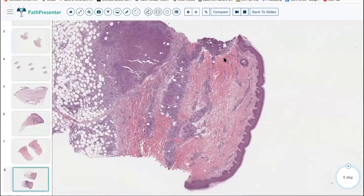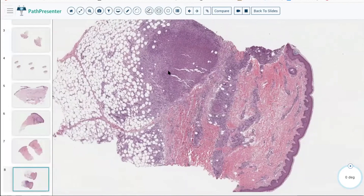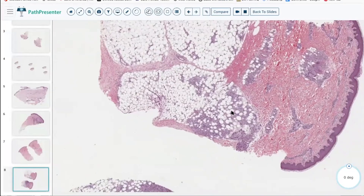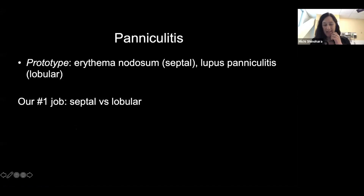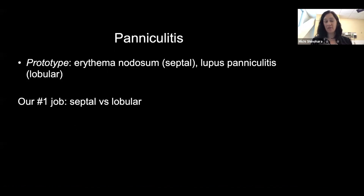We have a pretty broad punch biopsy with a good sampling of fat. Starting at the top — nothing going on really in the epidermis, maybe some superficial perivascular infiltrates but not too striking. What we do have is a pretty dense, deeper infiltrate — I would classify this as a panniculitis. The inflammation is infiltrating into the fat lobules rather than septal. Panniculitis has really two patterns — our job is to push people into septal or lobular. The prototype for septal panniculitis — and this is the best diagnosis because there's only one — is erythema nodosum. Every other panniculitis is lobular, and lupus panniculitis is a good example of that.